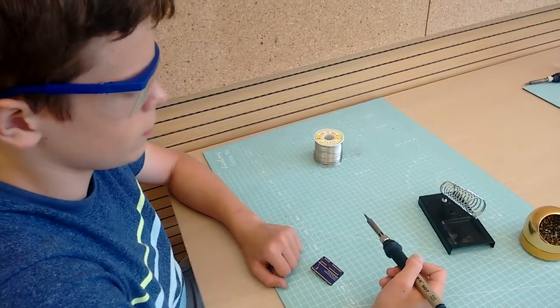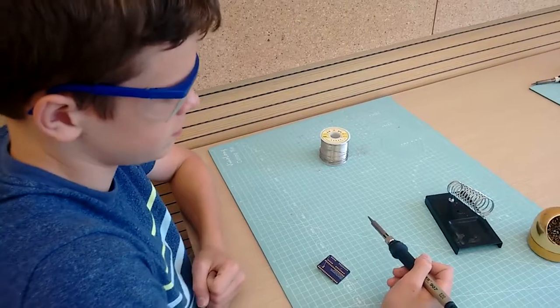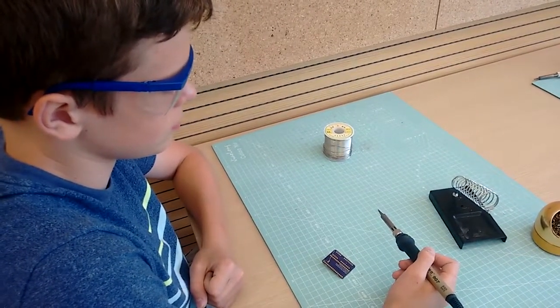Don't touch the end of the soldering iron. Its temperature is 700 degrees Fahrenheit or 400 degrees Celsius, and it will burn you.